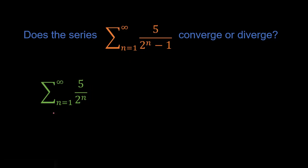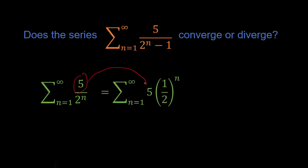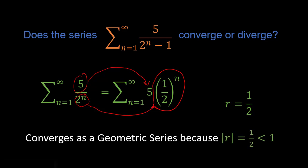Let's take a look at this series down here first in the green. We have the summation from n equals 1 to infinity of 5 over 2 to the n, and we can get this into geometric series form by taking the 5 out front, and 2 to the n becomes one half to the n. Now it's in geometric series form where we can find our r value equal to one half.